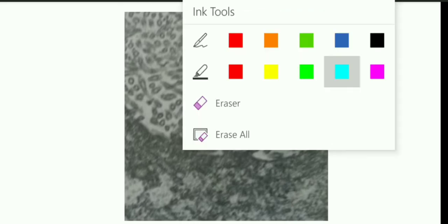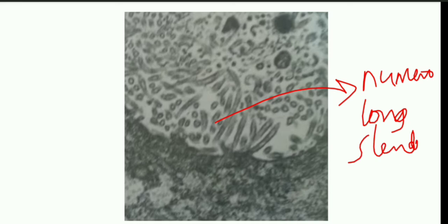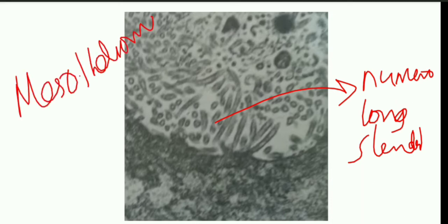Next, when you look at the other picture, this is also an electron microscopic picture, but here you can see there are many microvilli - numerous, and they are long and slender. Numerous microvilli and tonofilaments - their presence in electron microscopy suggests mesothelioma. So this is a mesothelioma electron microscopic picture.